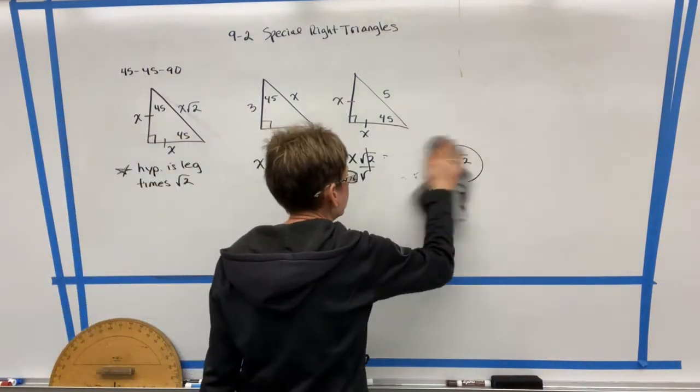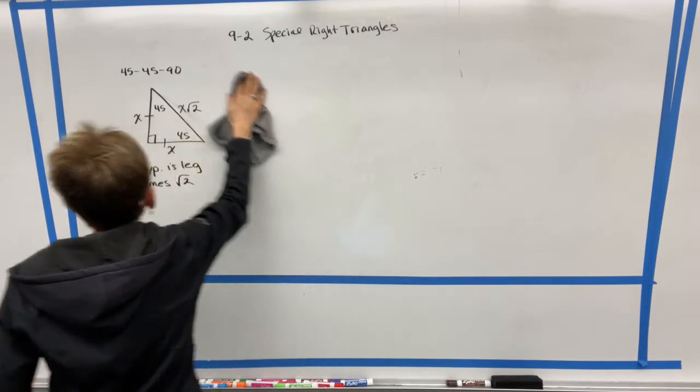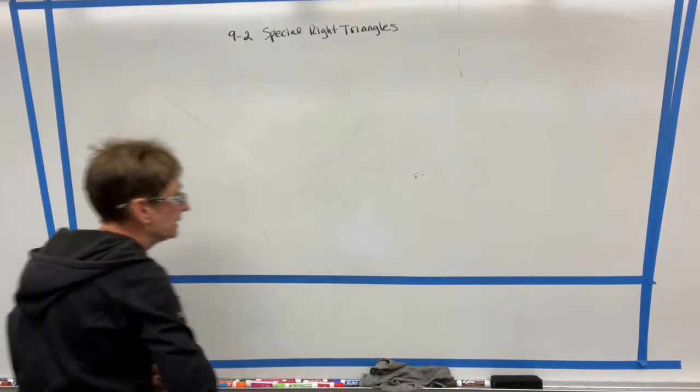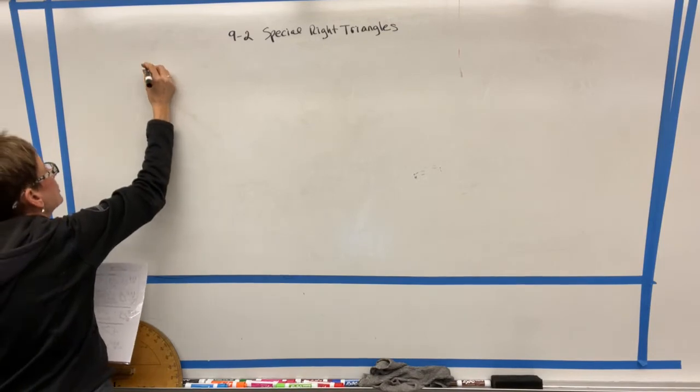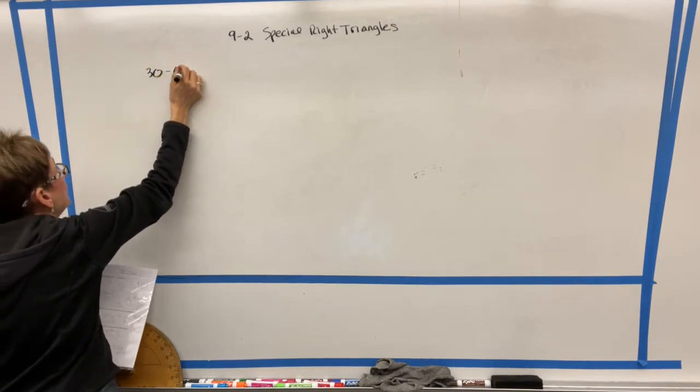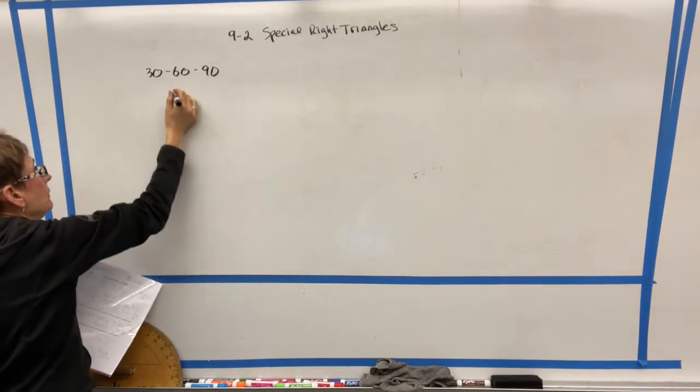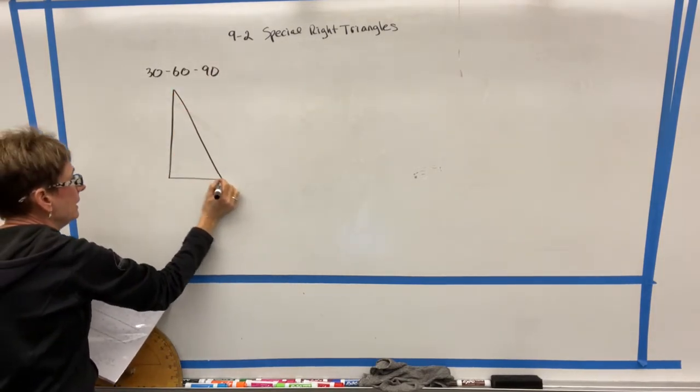Now, let's do a similar analysis of another special right triangle. And this is called a 30-60-90. So you can write on your notes 30-60-90. And let's draw a picture of a 30-60-90.